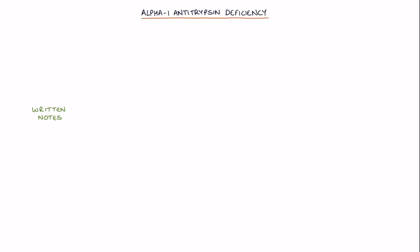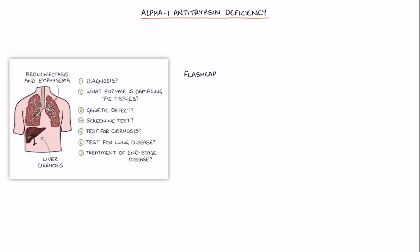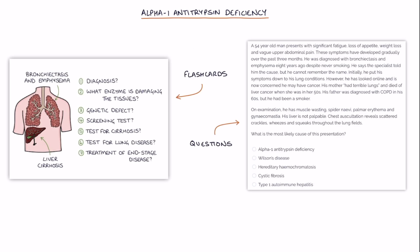You can find written notes on this topic at zerotofinals.com/aatdeficiency or in the gastroenterology section of the second edition of the Zero to Finals Medicine book. And you can find flashcards and questions to train your knowledge on this content and help you remember it for longer at members.zerotofinals.com.